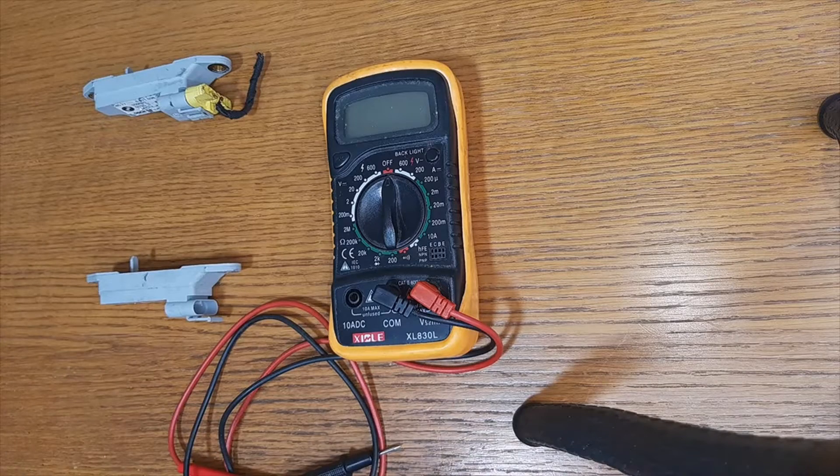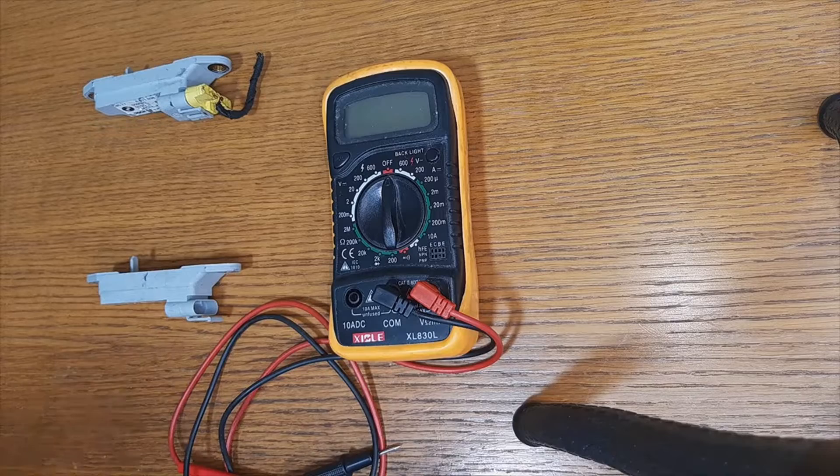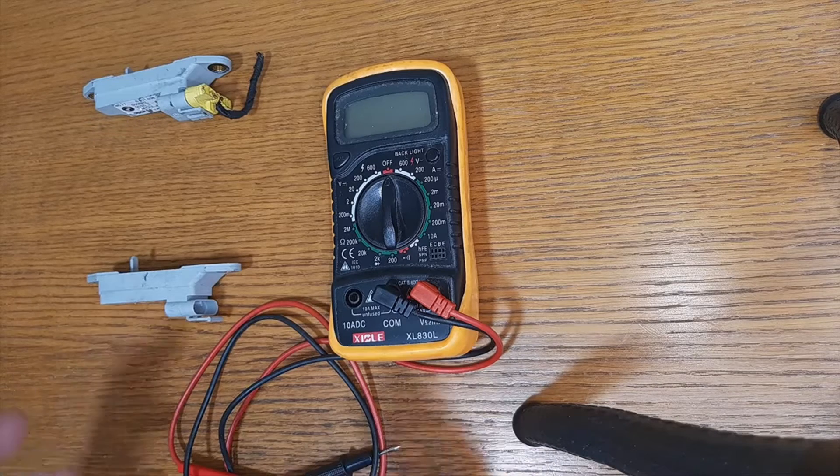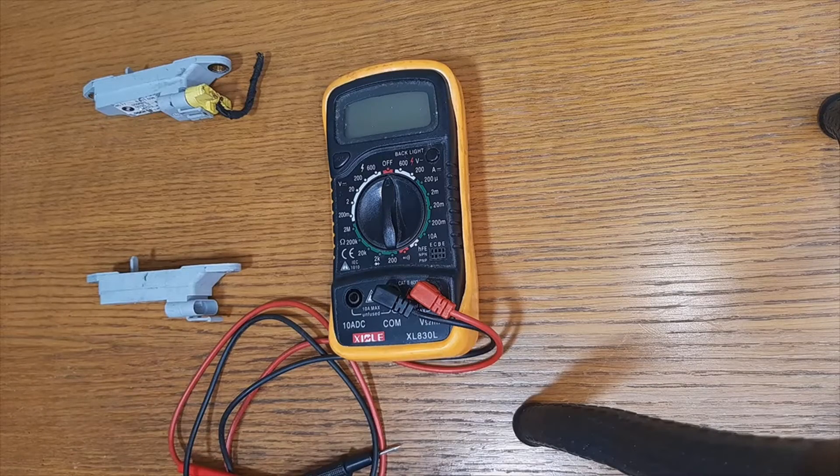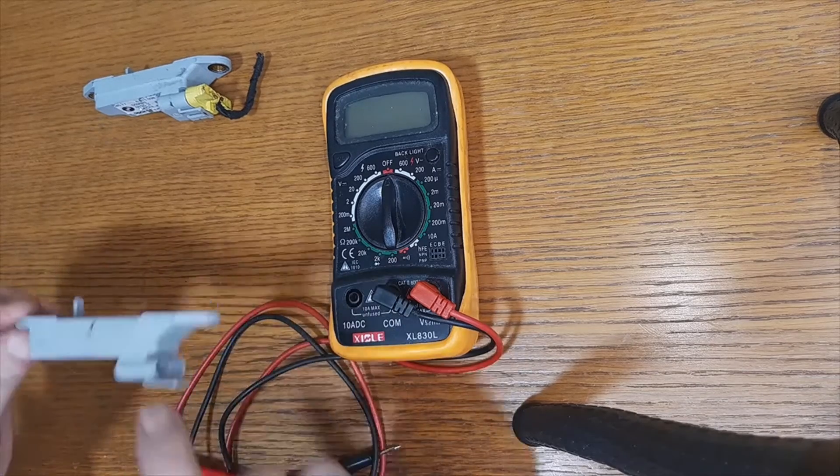They brought us an X5, BMW X5, which had the airbag light on in the dashboard. We put it in the diagnostic machine and the failure of the left side impact sensor of the airbag has come out. In this case it is this sensor.